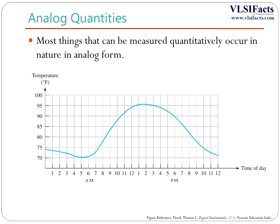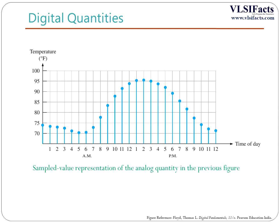Rather than graphing the temperature on a continuous basis, suppose we would take a temperature reading every hour. Now we have sampled values representing the temperature at discrete points in time on an hourly basis. We have effectively converted an analog quantity — temperature — to a form that can now be digitized by representing each sampled value by a digital code.